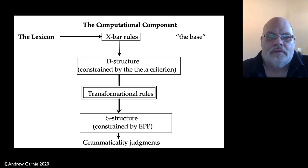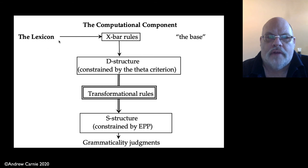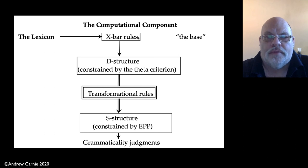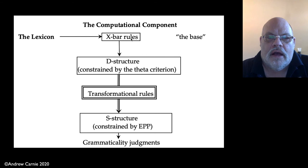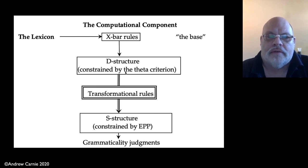Let's talk briefly about the model we have so far. We have really two main structures: a lexicon — a list of words and all their idiosyncratic properties — and the X-bar rules, which assemble those words into sentences. The lexicon plus the X-bar rules is called the base. The base creates a structure called the D-structure, which is constrained by the theta criterion. The D-structure is where you check that all theta roles and selectional properties are met — for example, that verbs have a complement if they require a theme.